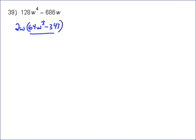So that gives us 2W times the cube root factors. 4 cubed gets us 64, and W cubed gets us W³, so the cube root is 4W. Then we subtract the cube root of 343, which equals 7, since 343 is 7 cubed. So we have 4W minus 7.